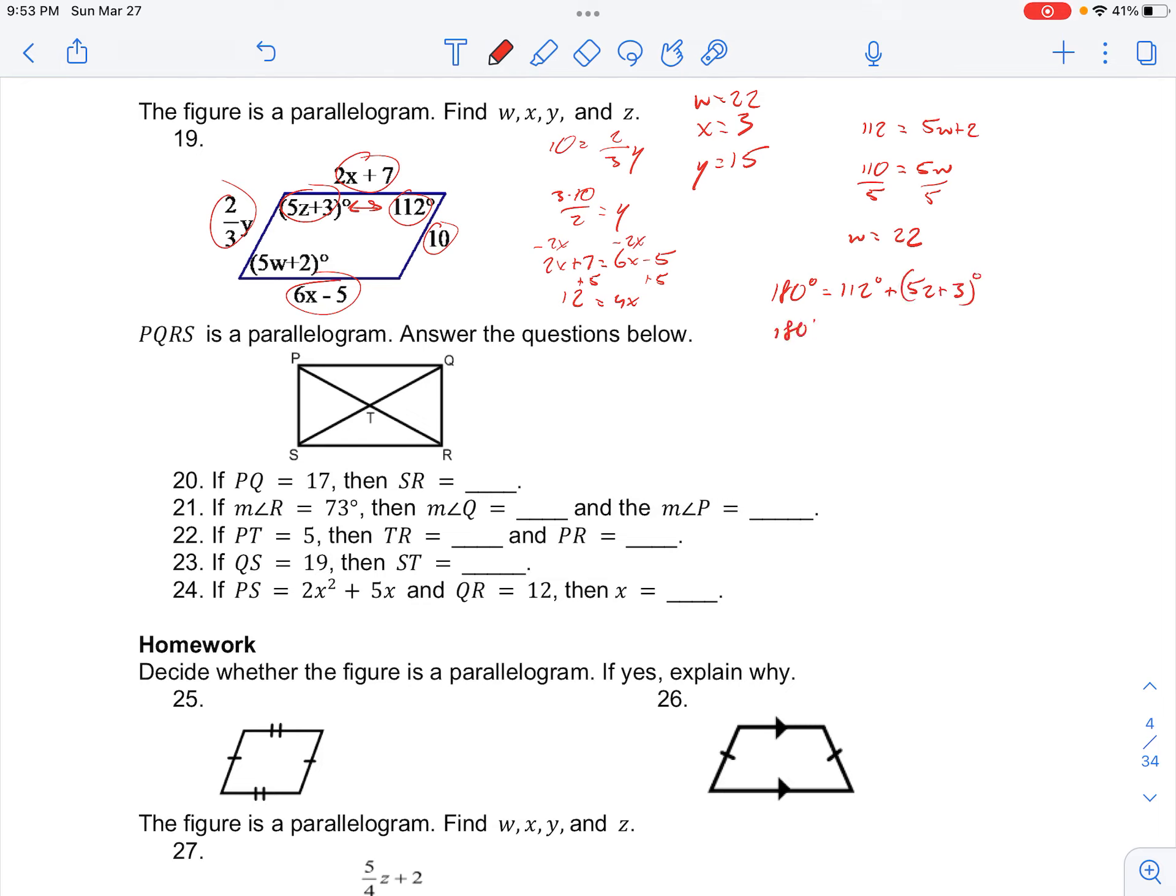And so we have 180 degrees equals 112 plus 3 is 115 degrees plus 5z degrees. Subtracting 115, we get that we have 65 degrees equals 5z. And dividing by 5, we get that z is equal to 13 degrees. So we have z as our missing variable.